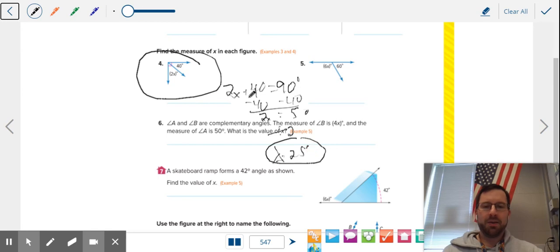X equals 25. If you can read my handwriting. And there you have it. 2 times 25 is 50, 50 plus 40 is 90. Boom, check.